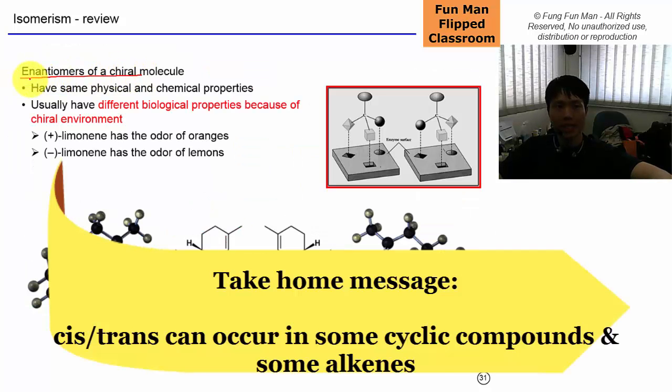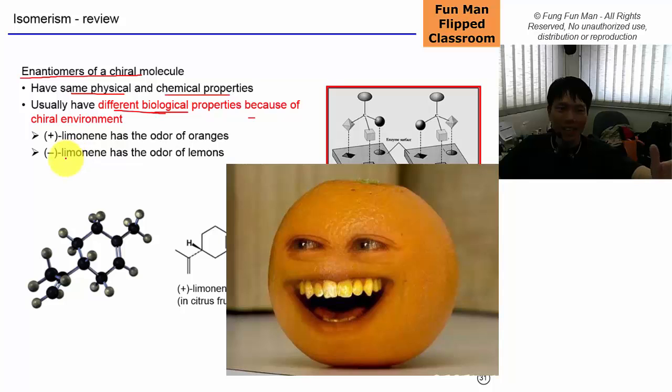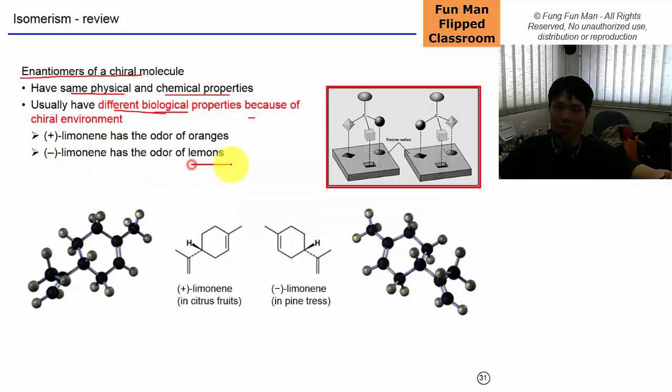Thought for the day is you have to know that enantiomers of a chiral molecule have the same physical and chemical properties but will have different biological properties because of the chiral environment that it goes in. So the positive limonene, you can see from the name right, has the odor of what I call smell. It smells good. Oranges. Negative limonene has the smell of lemon. So they smell different between the orange and lemon but you see, they just differ by a simple chiral center.